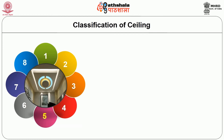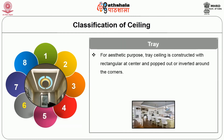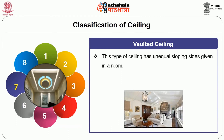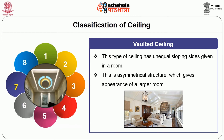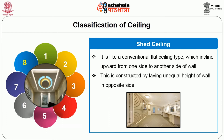Cove ceiling has a transitional curved cornice laid between the joint of wall and ceiling; the smooth corners make the building feel hollow, soft and graceful. Tray ceiling is constructed for aesthetic purposes with a rectangular center propped out or inverted around the corners, usually provided in kitchens and dining rooms; as two levels of ceiling are provided, it makes a smaller height room look taller. Vaulted ceiling has unequal sloping sides given in a room and is a symmetrical structure which gives the appearance of a longer room. Shed ceiling is like a conventional flat ceiling type which inclines upward from one side to another side of the wall, constructed by having unequal wall heights on opposite sides.